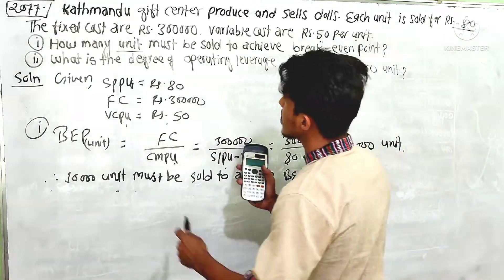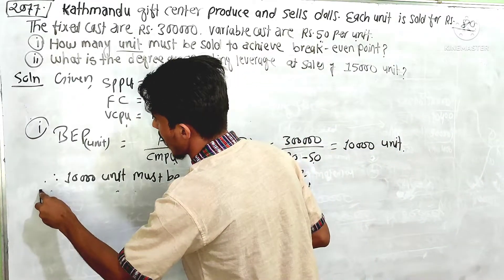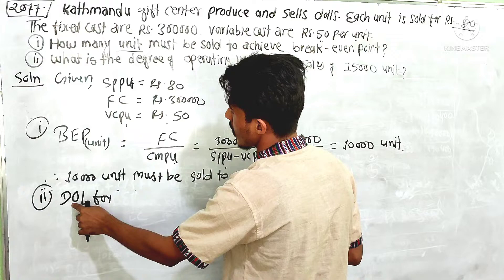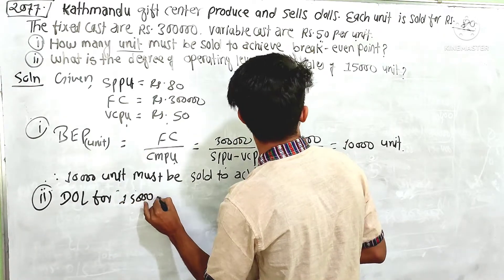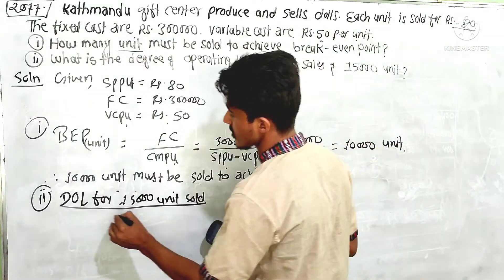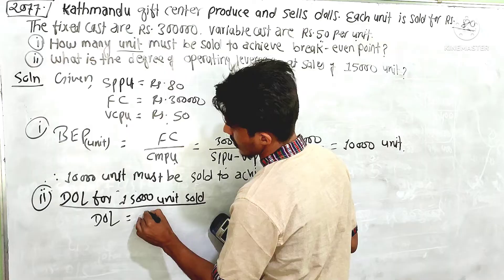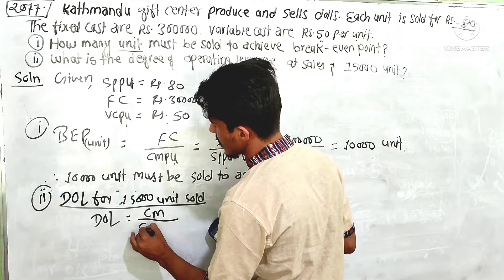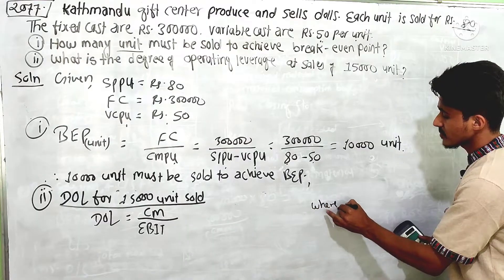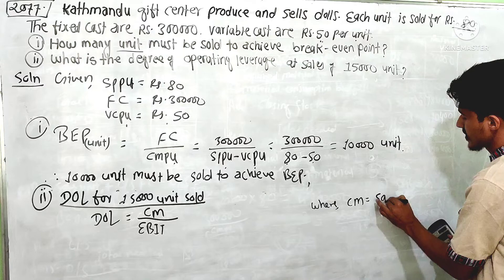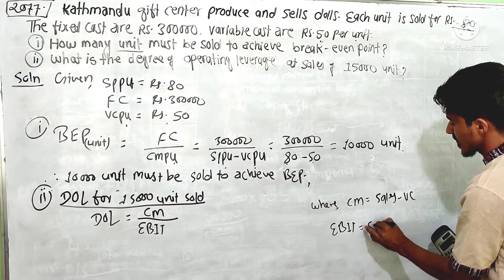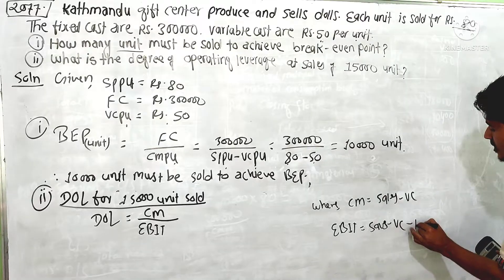What is the degree of operating leverage at sales of 15,000 units? For degree of operating leverage (DOL) at 15,000 units sold, the formula is contribution margin divided by EBIT, where EBIT is Earnings Before Interest and Tax. The contribution margin (CM) is sales minus variable cost.